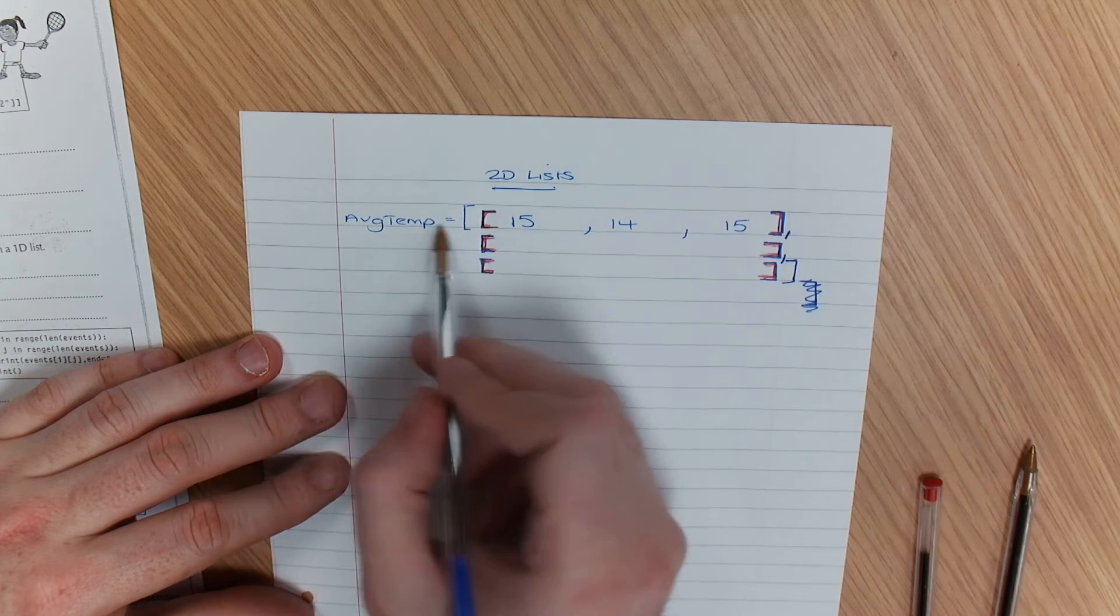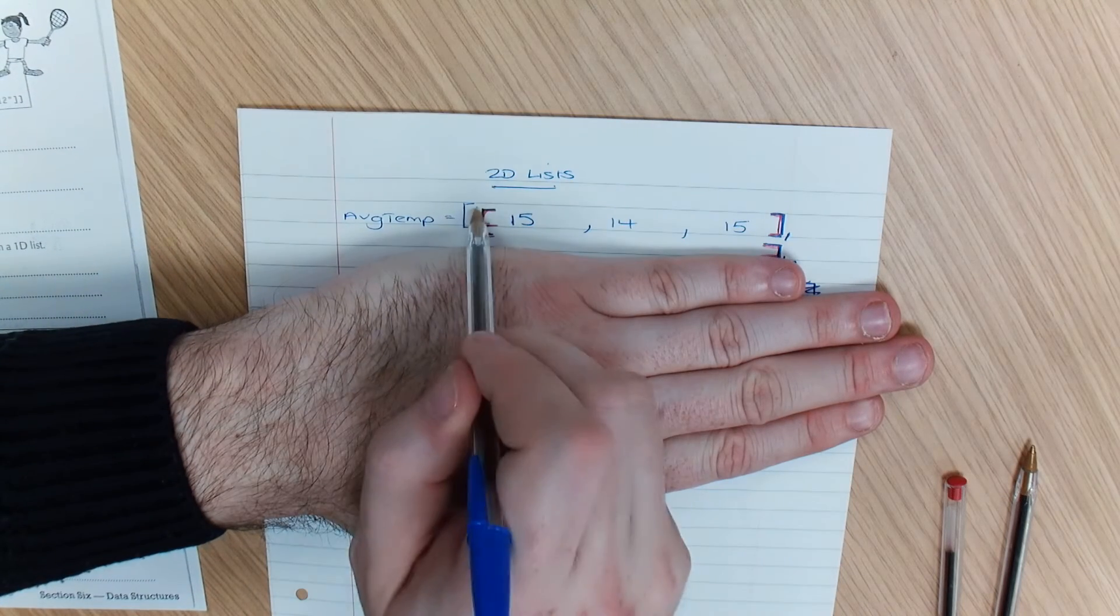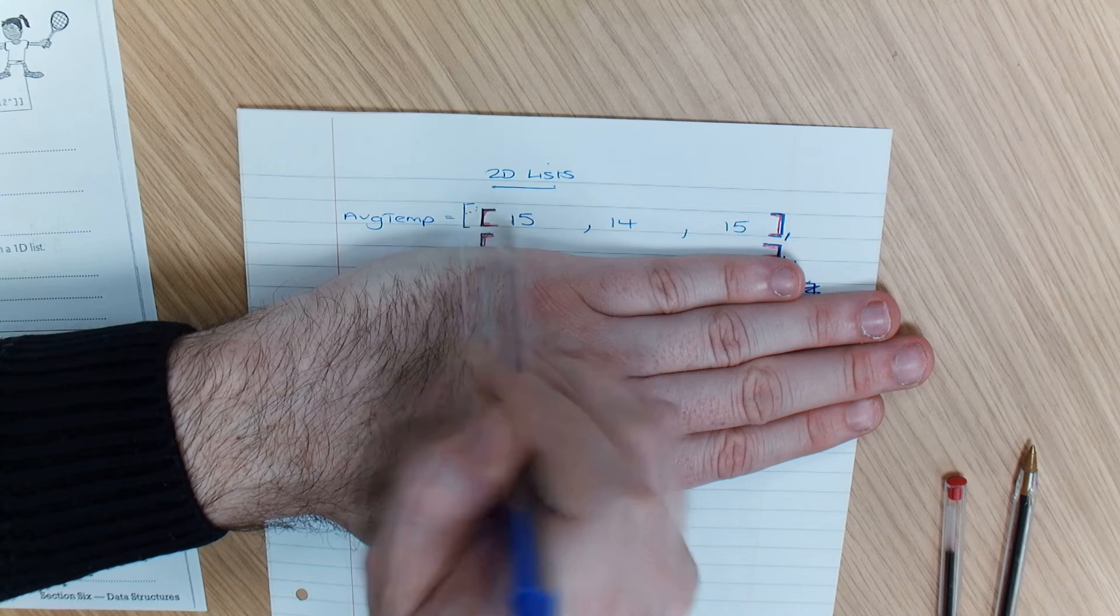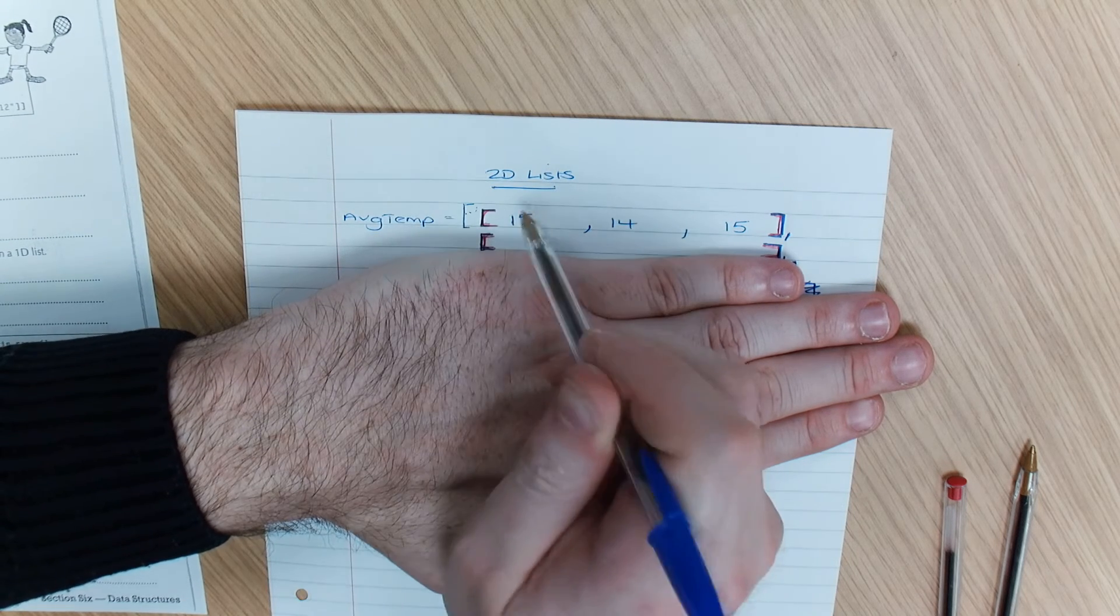So that would be like average. Imagine we didn't have anything else or this other bracket here. If I needed to look at the value 15, I would just put average bracket, average temp, square bracket, 0.